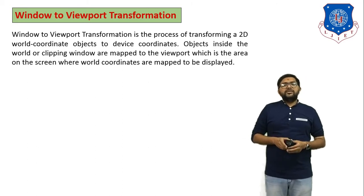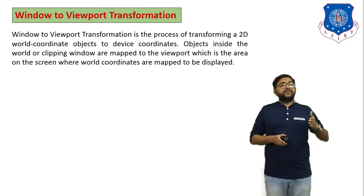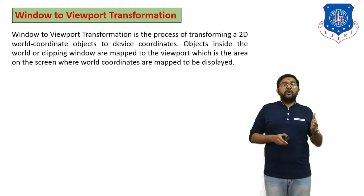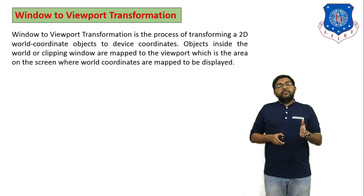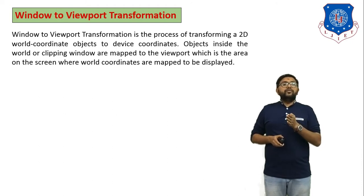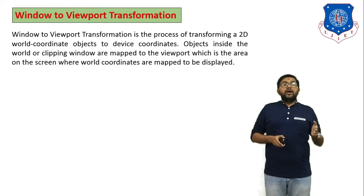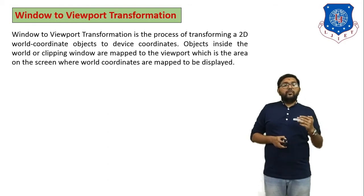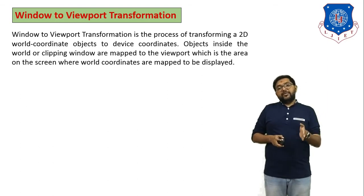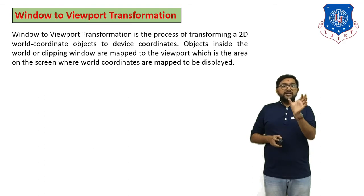Window-to-viewport transformation is the process of transferring the world coordinate object to the device coordinate. Objects inside the world or clipping window are mapped to the viewport, which is the area on the screen where world coordinates are mapped to the display. We will understand how to convert world coordinate system into device coordinate system using a figure.